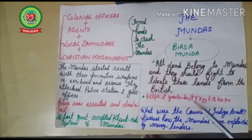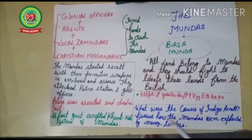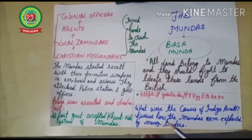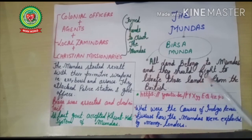If you want to explore more on this topic, go through the YouTube link provided. Review questions from Chapter 4 include: what were the causes of the Indigo Revolt, covered in the last session, and how the Mundas were exploited, covered in this session. I hope you have understood the explanation and notes. Please make notes on the above topic. Thank you.